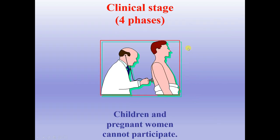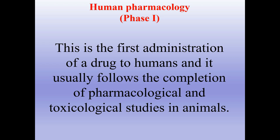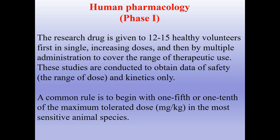Clinical stages are divided into four phases. Children and pregnant women cannot participate in these clinical experiments. Phase one — human pharmacology — is the first administration of a drug to humans, usually following completion of pharmacological and toxicological studies in animals. The research drug is given to 12–15 healthy volunteers, first in single increasing doses, then by multiple administrations to cover the range of therapeutic use. These studies are conducted to obtain data on safety, dose range, and kinetics only. A common rule is to begin with one-fifth or one-tenth of the maximum tolerated dose in the most sensitive animal species.